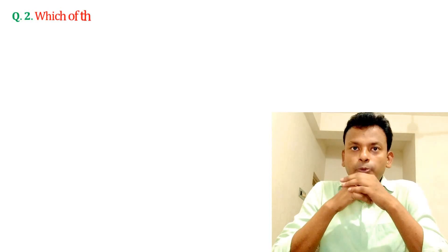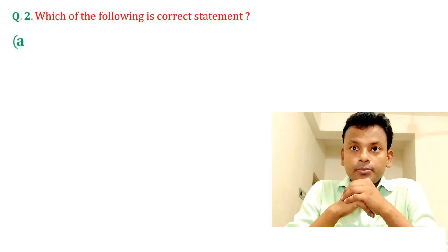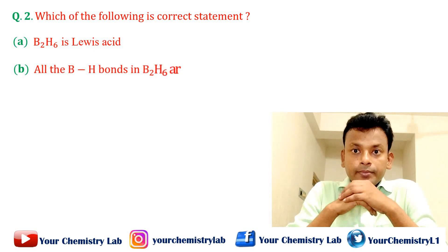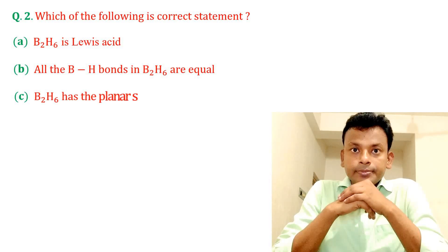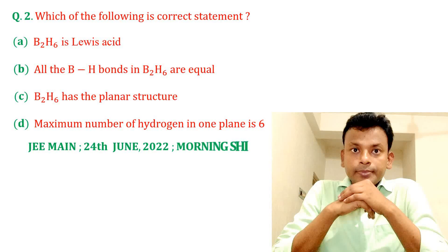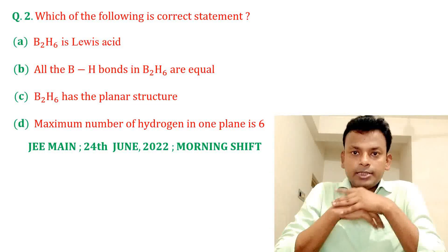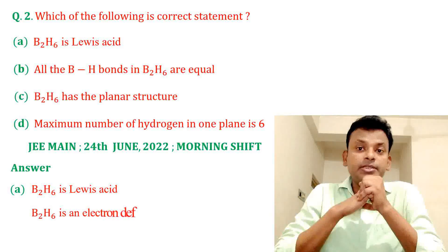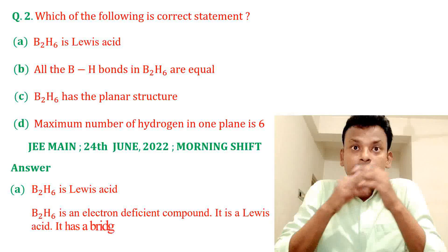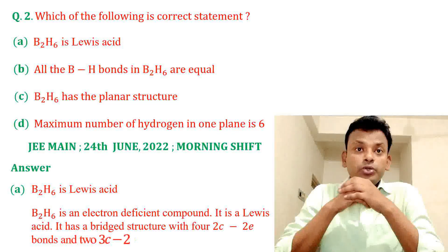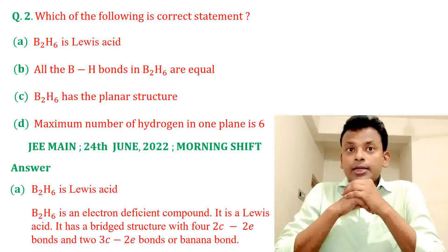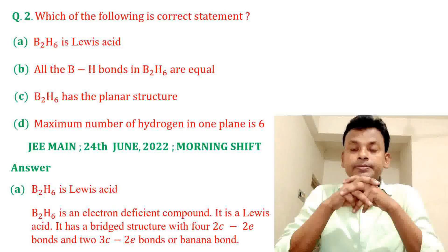Question number two: which of the following is the correct statement? Options A, B, C, and D are given. Answer: option A is correct, that is B2H6 is a Lewis acid. B2H6 is an electron-deficient compound and thus a Lewis acid. It has a bridge structure with four 2-centre 2-electron bonds and two 3-centre 2-electron bonds, also known as banana bonds. So option A is correct.